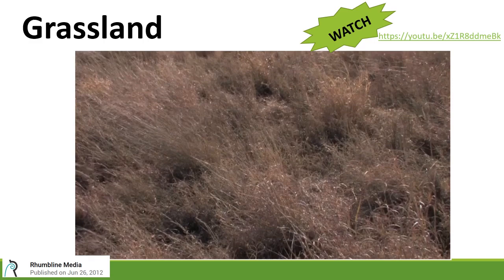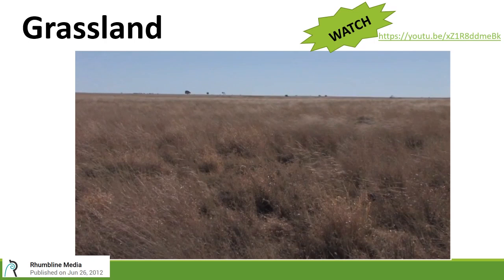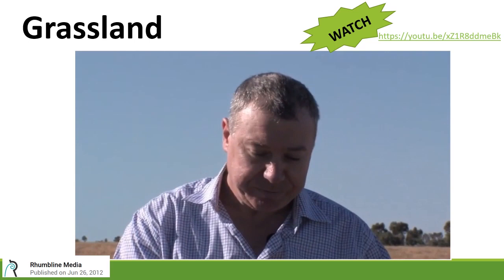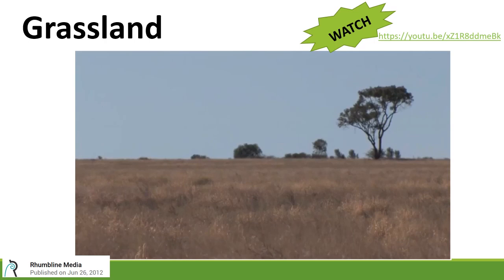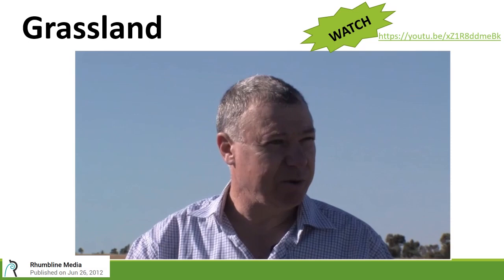Here we are in this magnificent Mitchell grass country, especially after the well above average summer rainfall. One of the really interesting things about Mitchell grass is that it is endemic to Australia — it only grows in Australia on heavy clay soils. It is very productive as a perennial grass, and particularly by the dry season in the middle of winter it's a really good standover feed — almost like a standing haystack for cattle and sheep production. Individual plants can live 20 to 30 years quite easily.